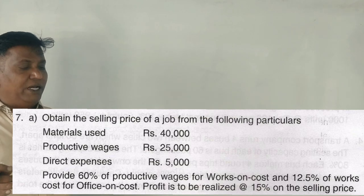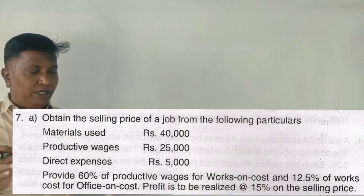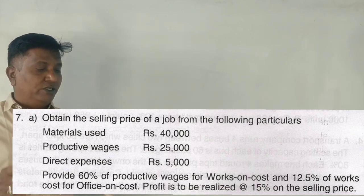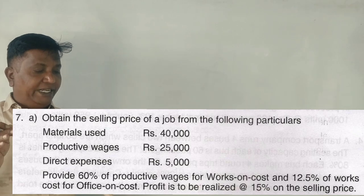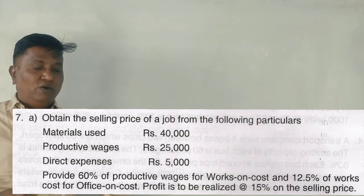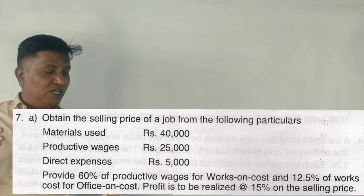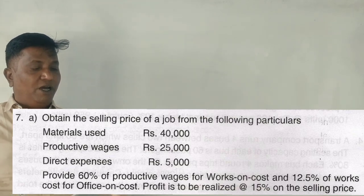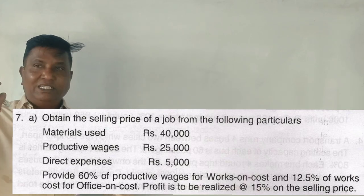Obtain the selling price of a job from the following particulars: material use, productive wages, direct expenses. Provide 60% productive wages for works on cost, 12.5% works on cost for office on cost, profit to be realized 15% on the selling price.